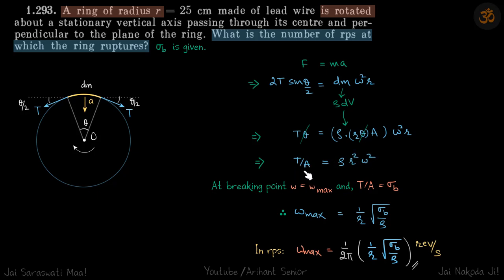When that reaches sigma b, omega will reach omega max. So we put that here and we get omega max to be 1 by r root sigma b by rho.